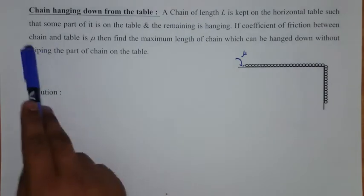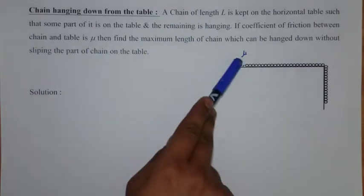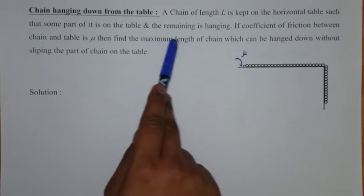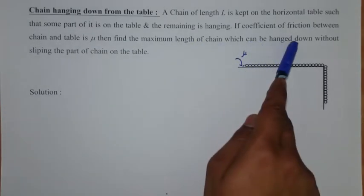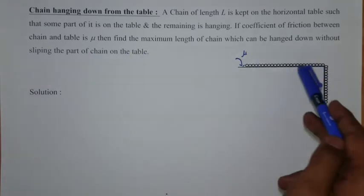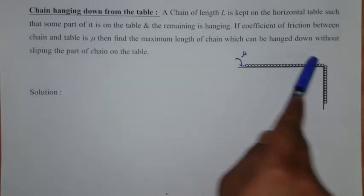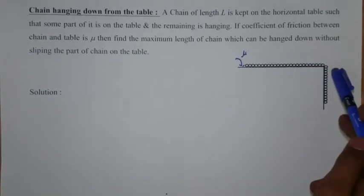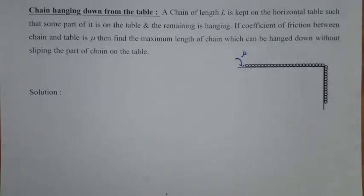If coefficient of friction between chain and the table is mu, coefficient of friction is mu. Then find the maximum length of the chain which can be hanged down without slipping the part of the chain on the table. Without slipping the part of the chain on the table, we need to find out this maximum length which can be hanged down.